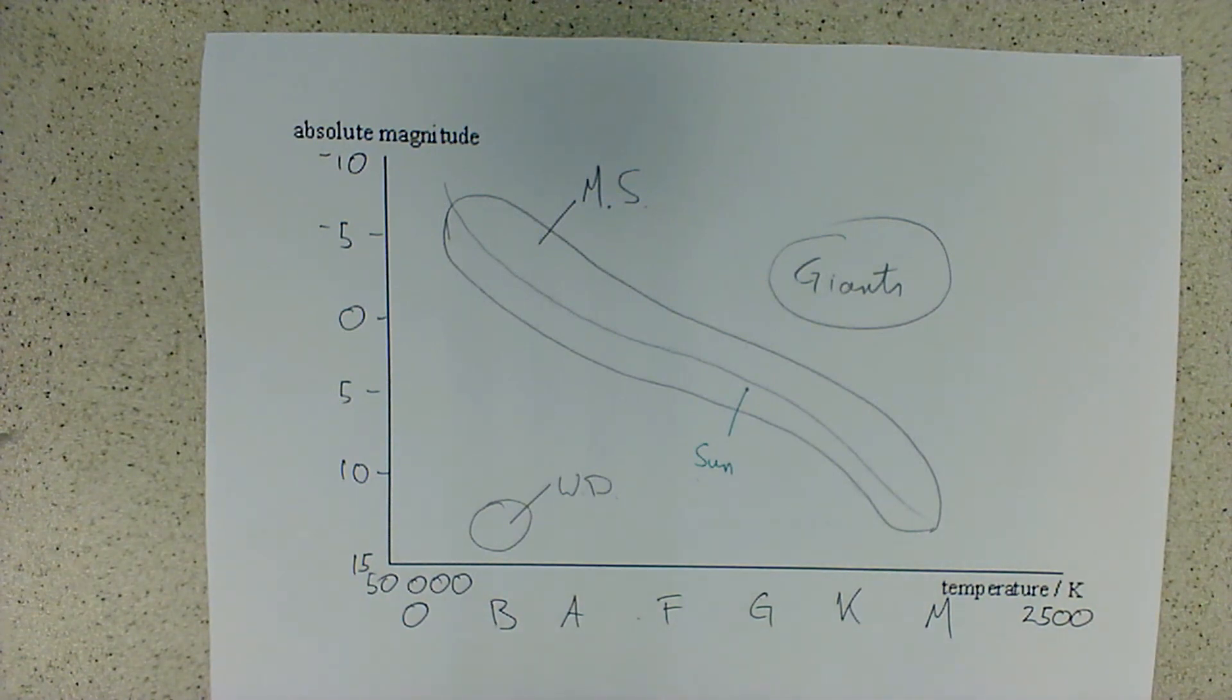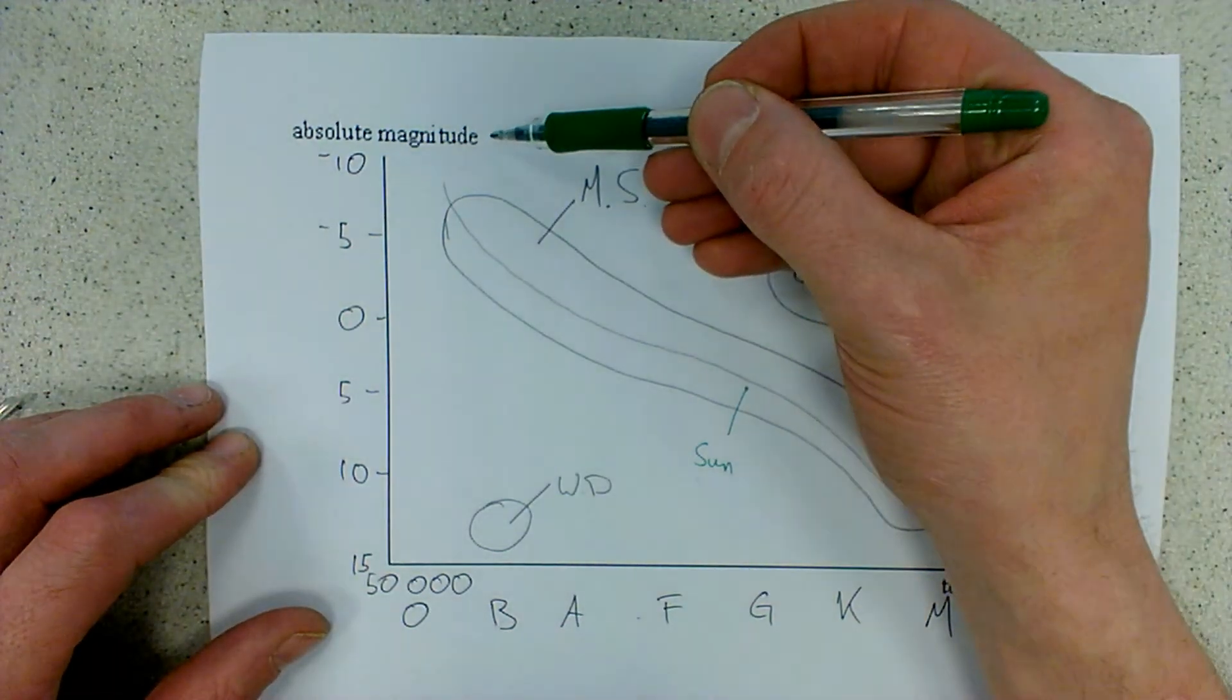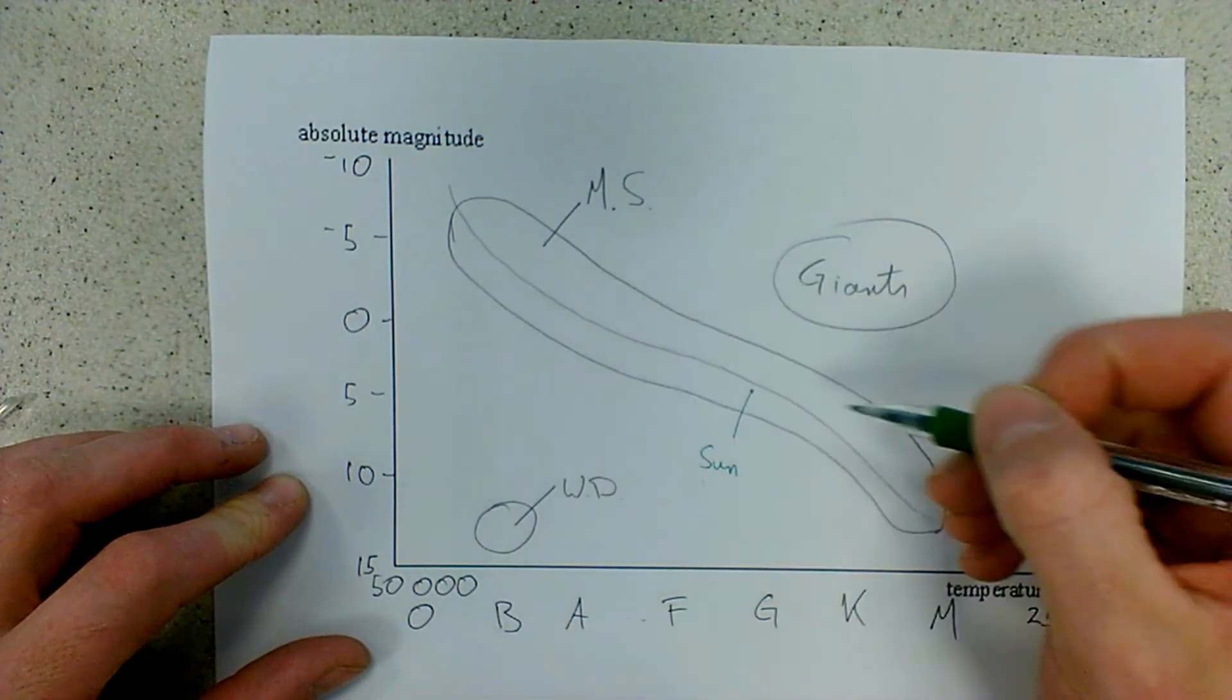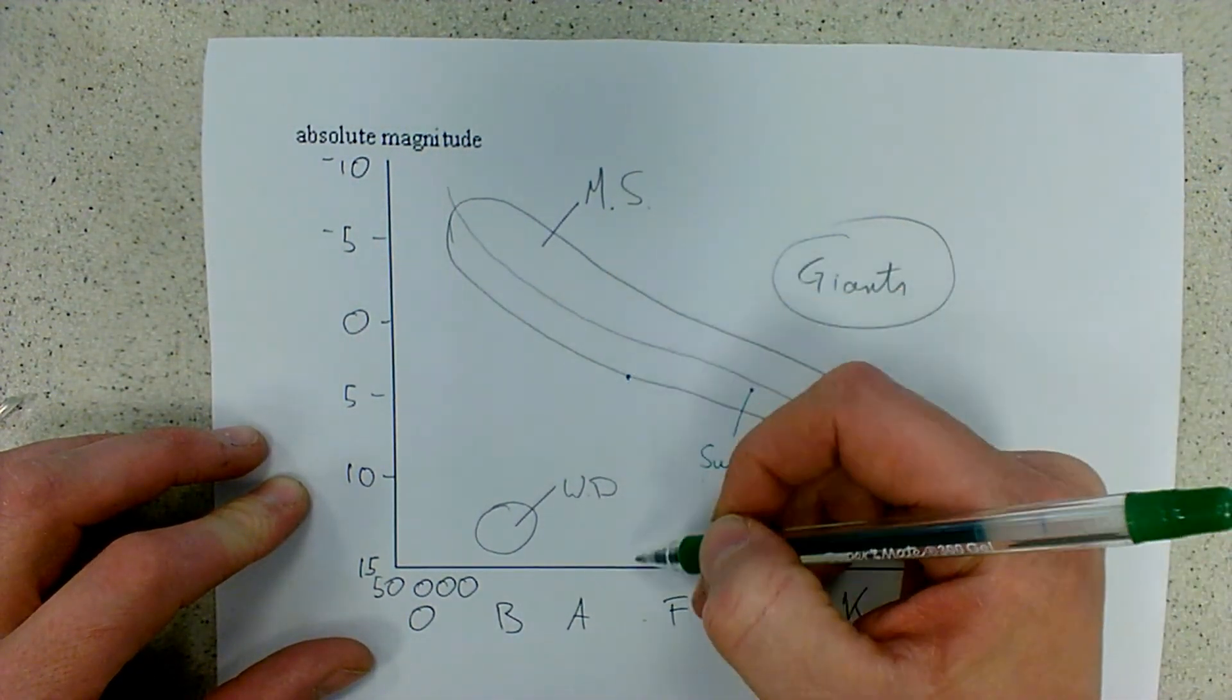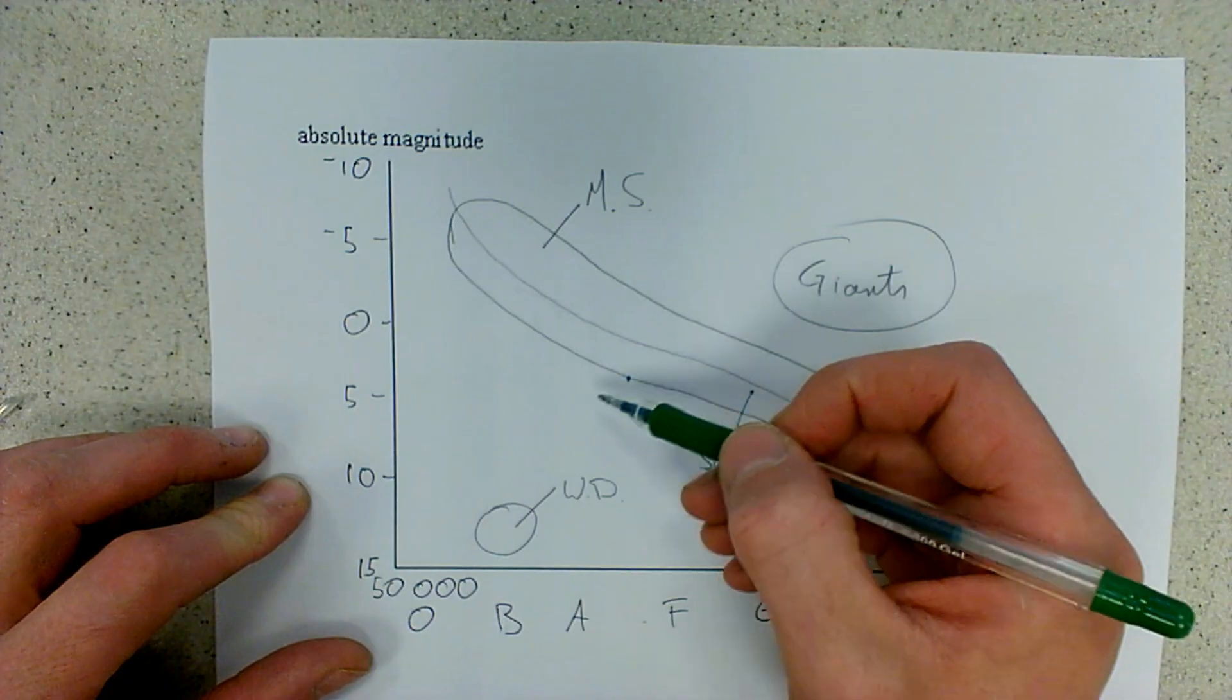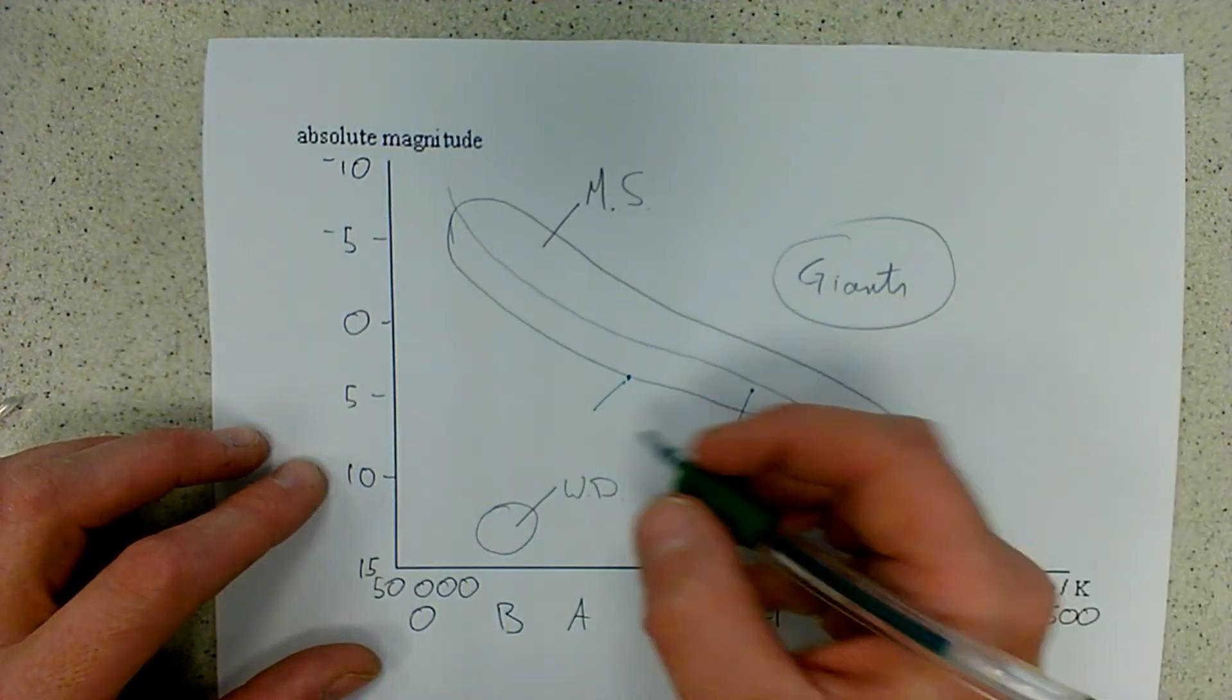We also may be expected to put on other stars which you can compare to the Sun. So for example, we might want to put a star which has got the same brightness as the Sun, but might have a much higher temperature. Now brightness is the absolute magnitude. So a star with the same brightness will have the same absolute magnitude, but a much higher temperature would be over here. So we draw a horizontal line across and then we can mark it on the edge of the cloud. That would be an A-class star there. If you've drawn the main sequence slightly flatter over here, you may even get it into the B-class. So that would be hotter, but the same magnitude.